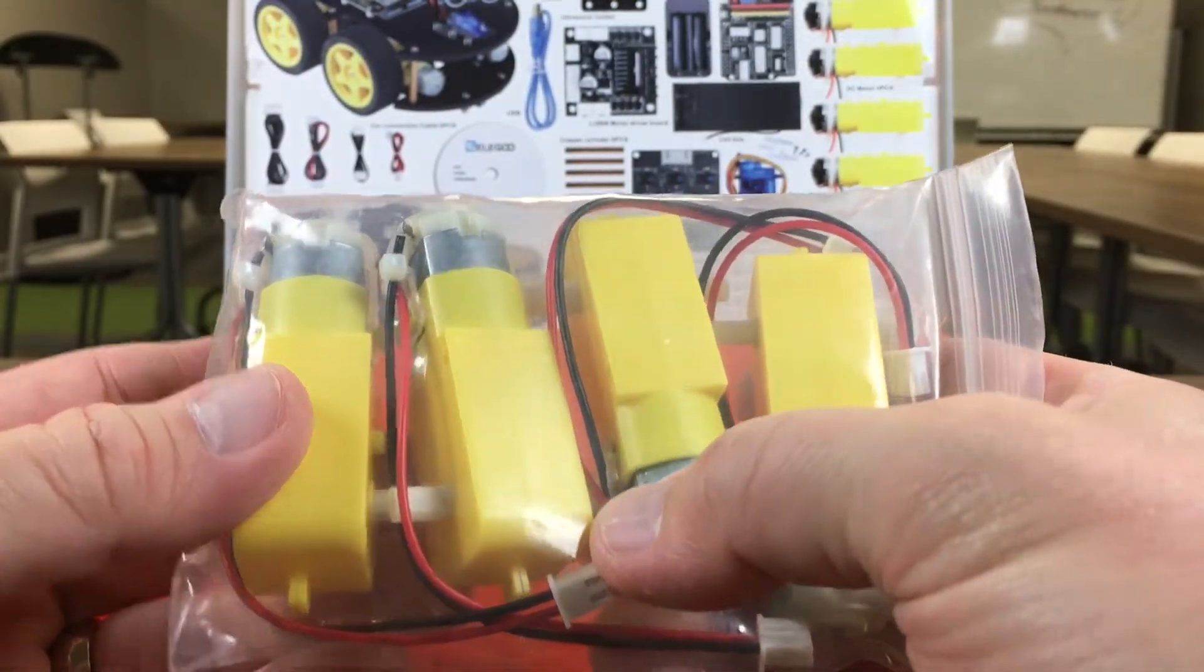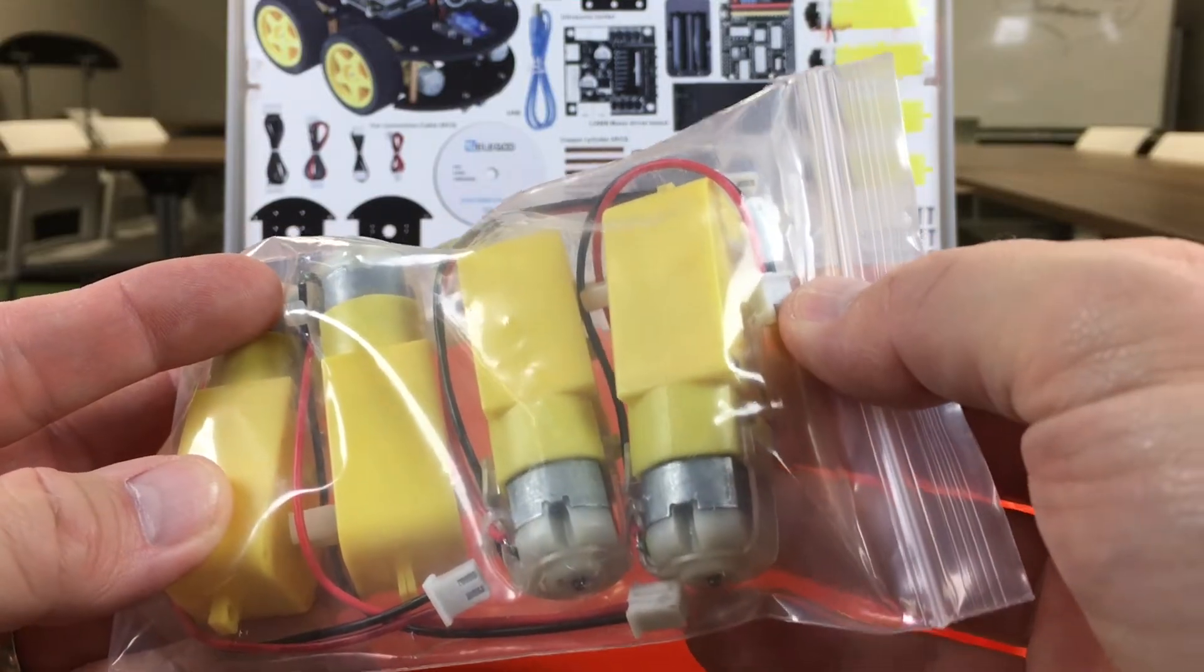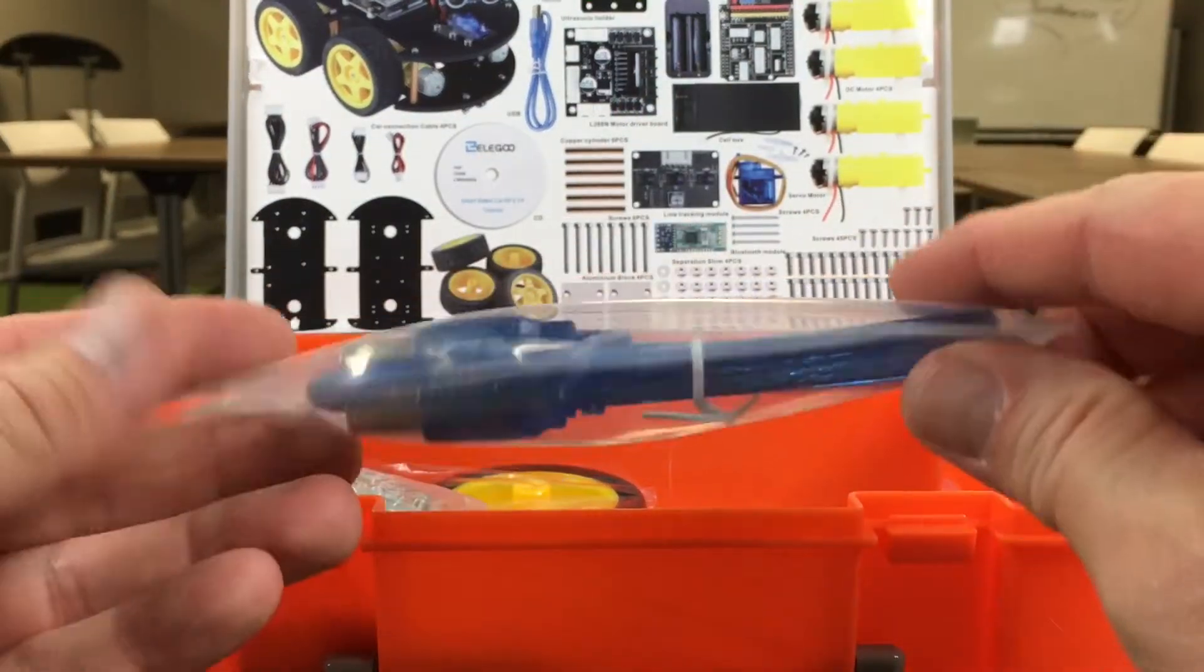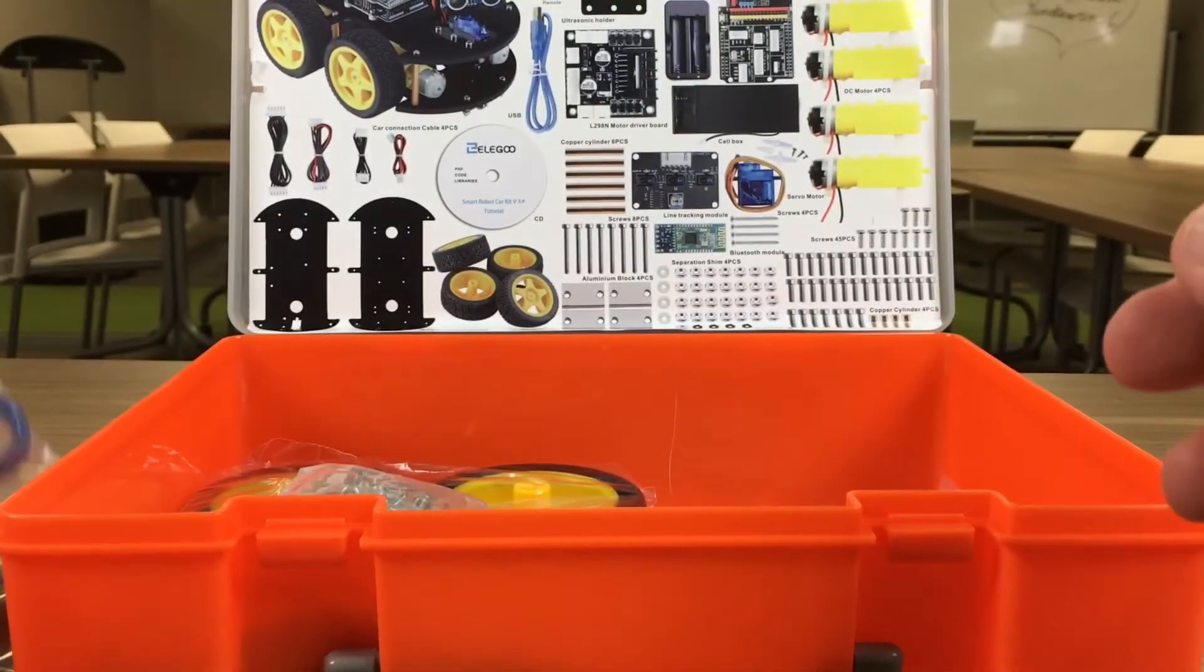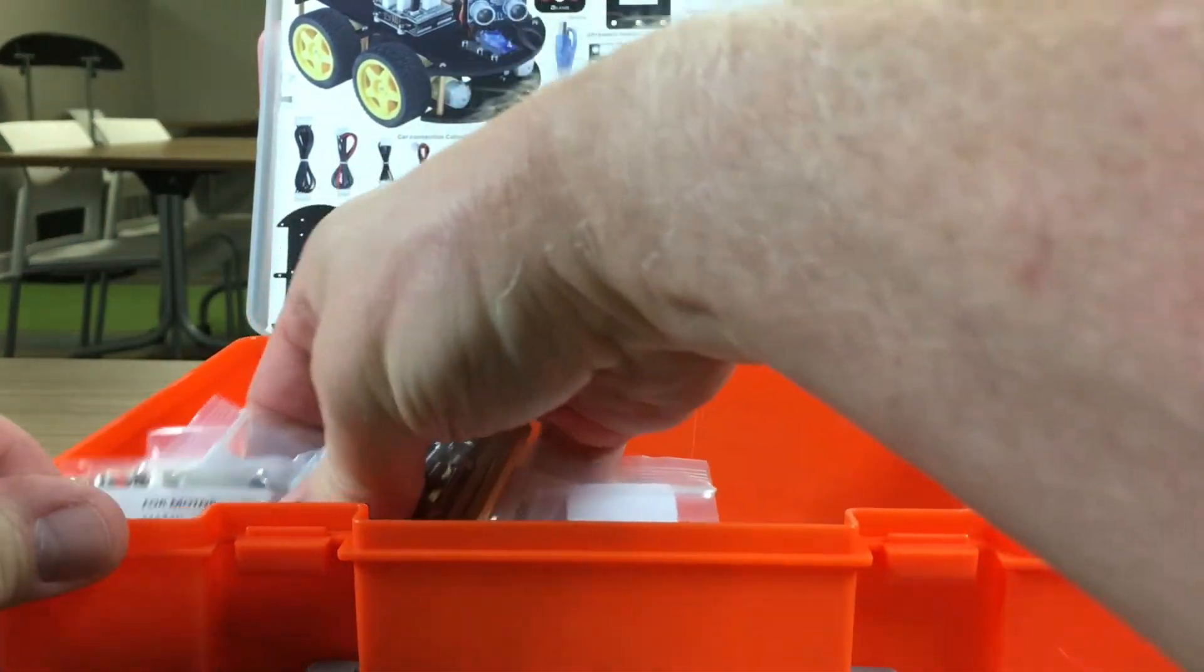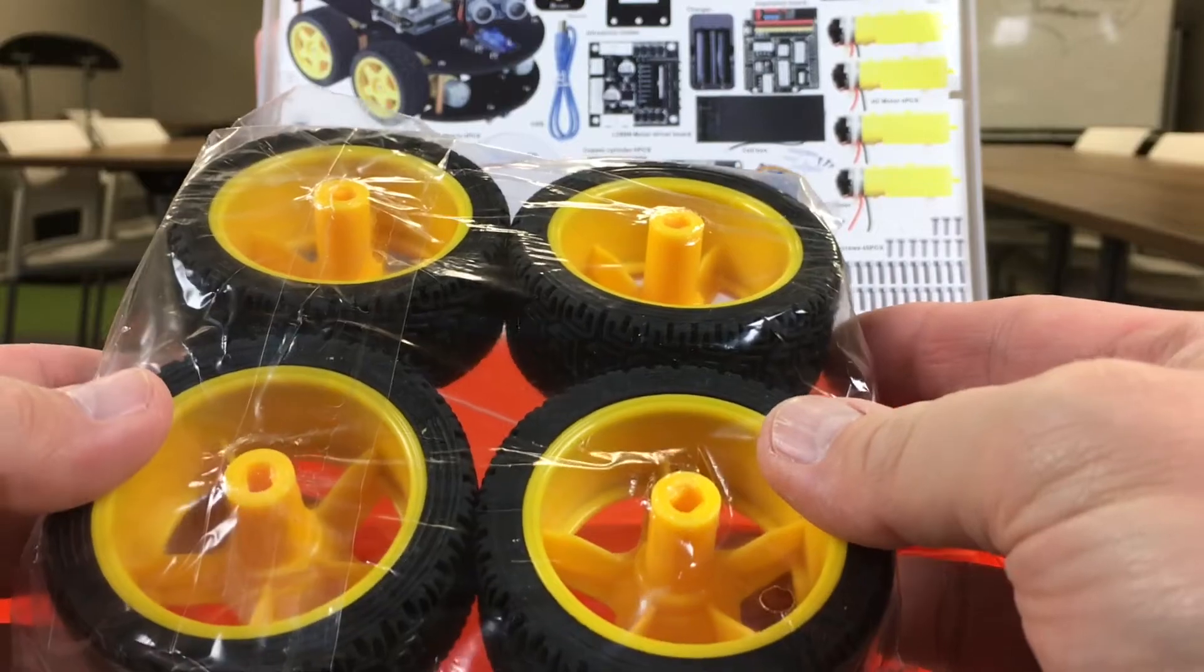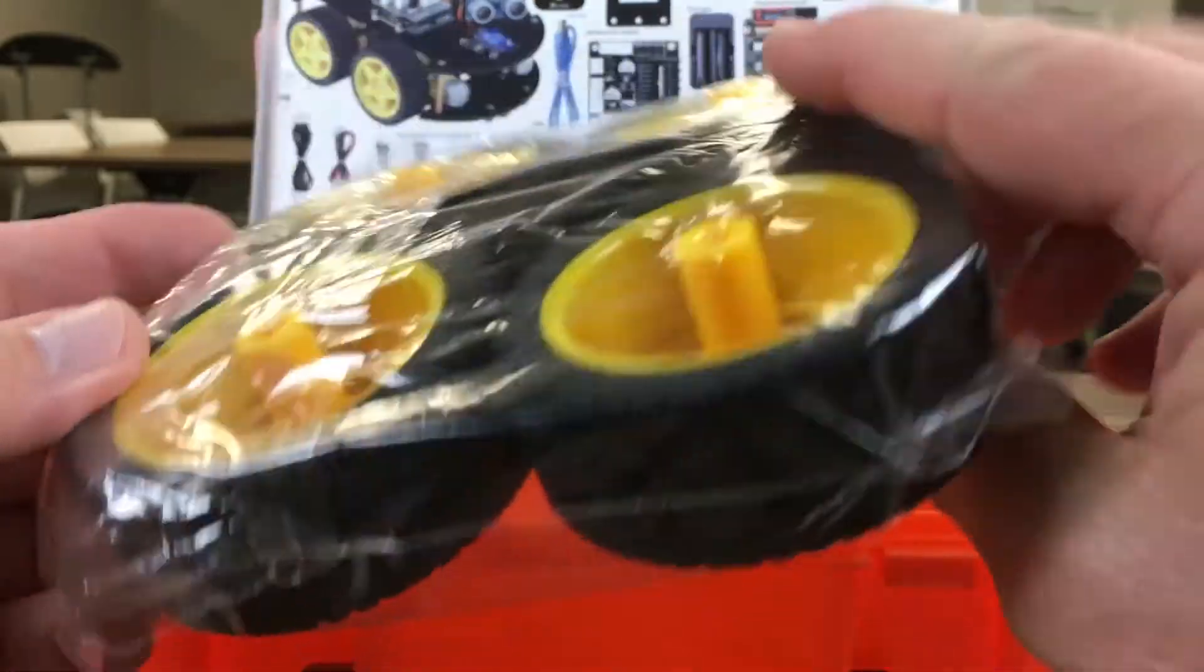They've pre-soldered the wires for power, which includes a nice plug that will just plug right into the motor controller board, so again, no soldering there. Got your USB cable for plugging into the UNO R3 microcontroller board for programming it. Speaking of the programming, I don't have it here to show you, but the kit does come with a CD that has the sample programs and projects and instructions included, so all your tutorials and all the materials you need to build the robot and your projects are included.